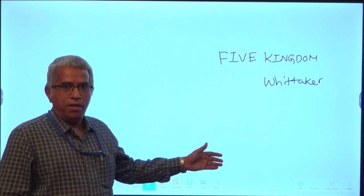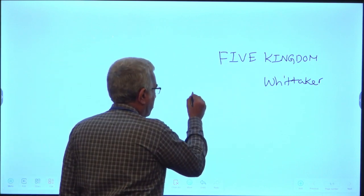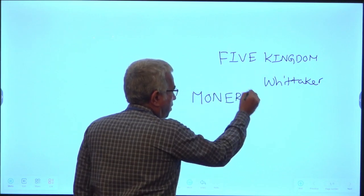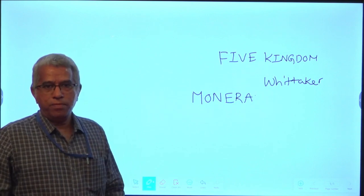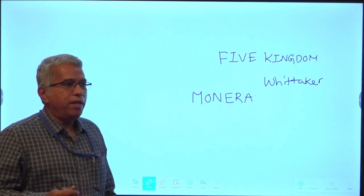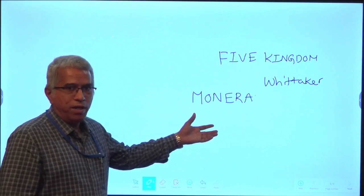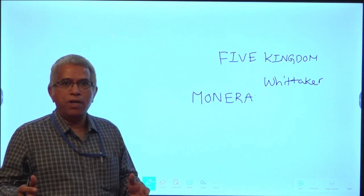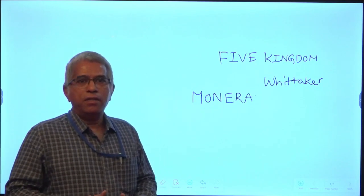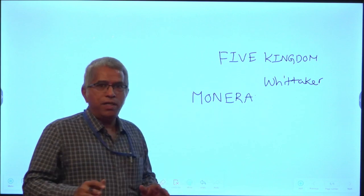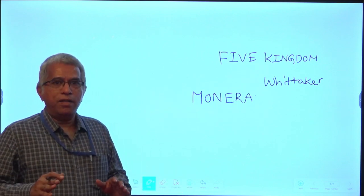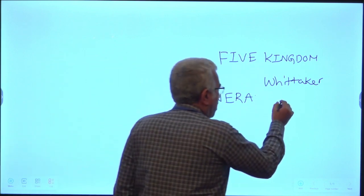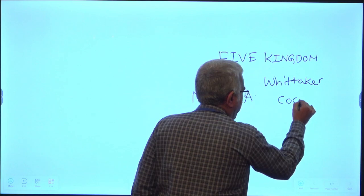The first kingdom is Monera. This includes only bacteria — both eubacteria and archaebacteria come under Monera. These are prokaryotes, meaning they don't have a definite nucleus. These bacteria are classified into different categories based on their shape.